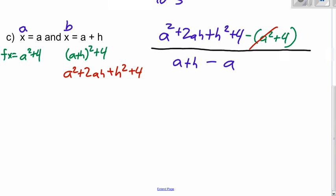So we have a squared minus a squared. Those are going to cancel. 4 minus 4, those will cancel. So on top, we have h squared plus 2ah over, on the bottom, the a's cancel out, a minus a, so we just have over h. We can simplify that a little bit further because everything has an h, so we can cancel that out. h squared divided by h is h. 2ah divided by h is just 2a.